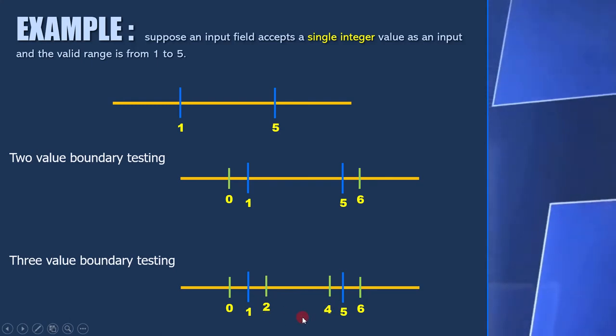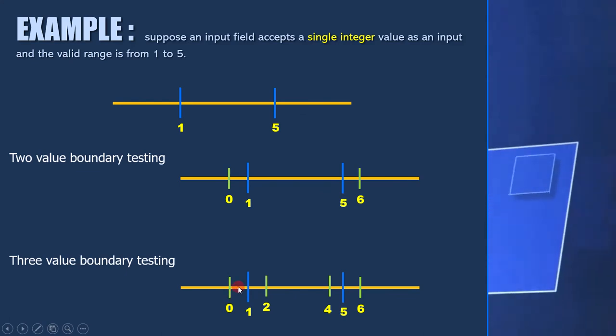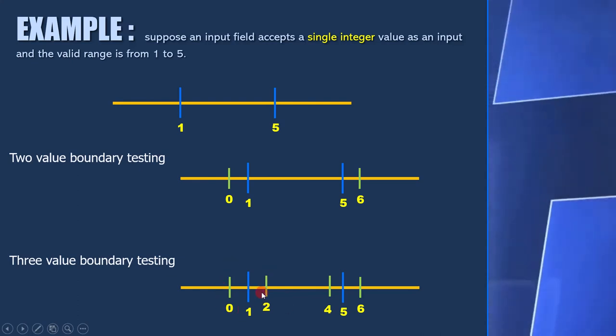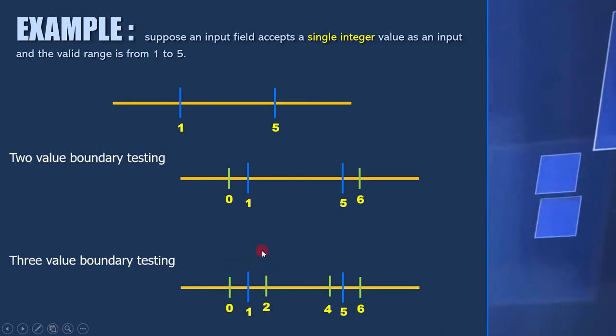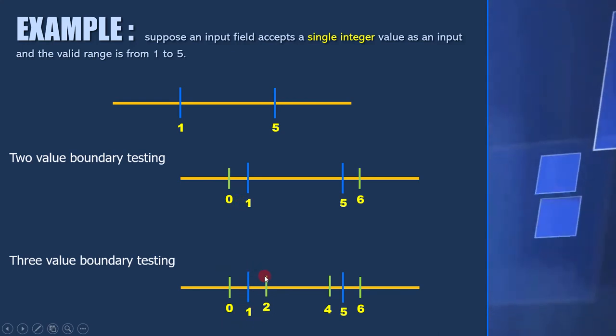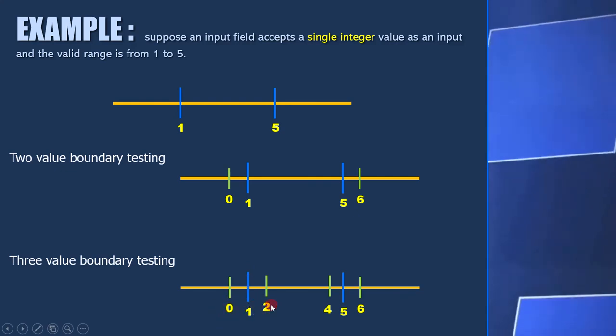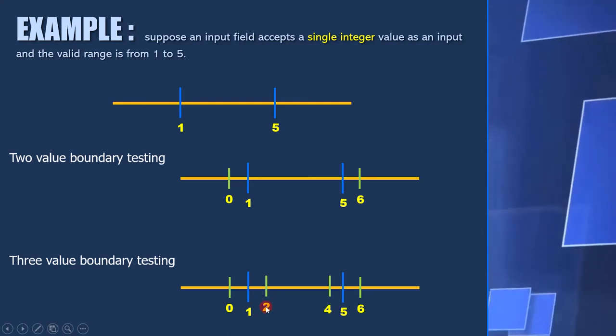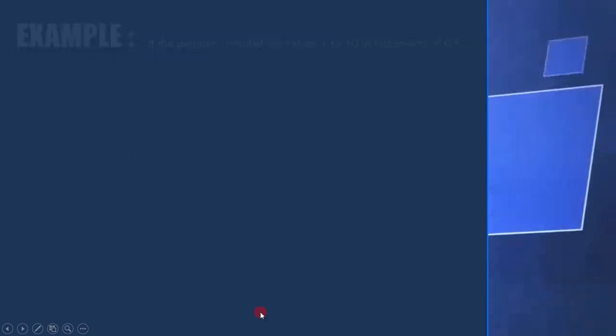Now if you look at both the diagrams, you can clearly see why they are named two-value boundary testing and three-value boundary testing. Here at each boundary, we are testing two values. One at the boundary and one outside the boundary. And here at each boundary, we are testing three values. One at the boundary, one outside the boundary and one inside the boundary. Now let's see one more example for more clarity.